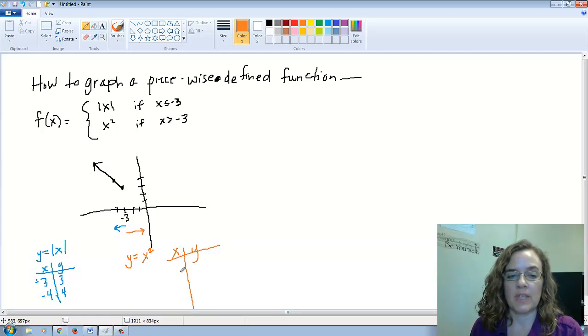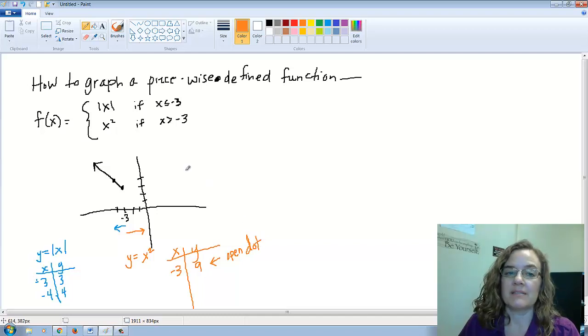This is the x squared, so when I'm making my table of values at negative 3, I know I'm going to be up at 9. The thing to remember is this is going to be an open dot because it's not equal to here.